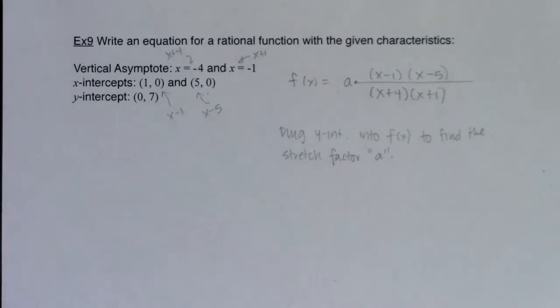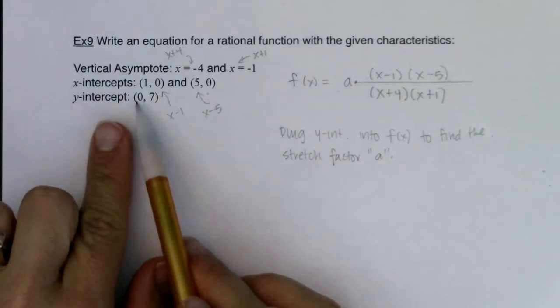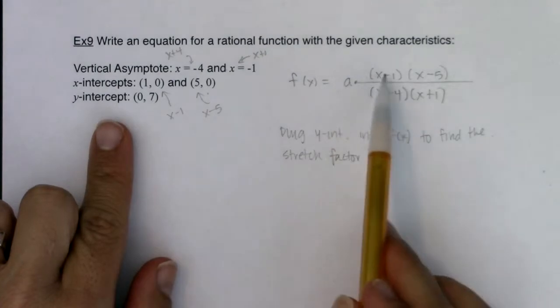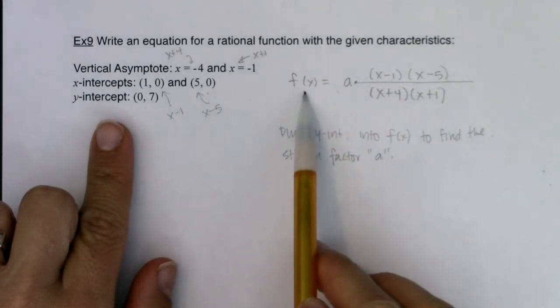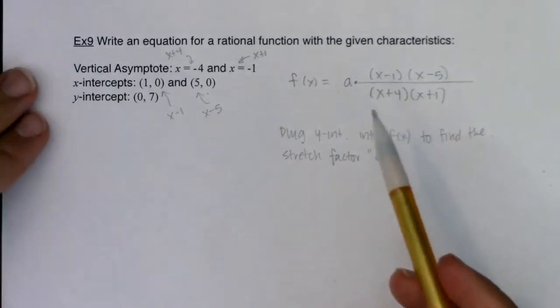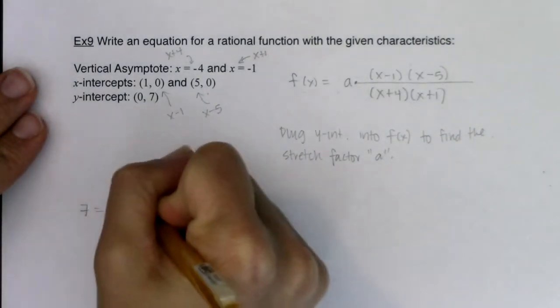Are we stretching or shrinking our y-values? All right, so if I'm going to plug my y-intercept in, it's saying when x is 0, y is 7. So I'm going to plug 0 in for x in these four spots, and I'm going to plug 7 in for y in the function. All right, so let's see what we have here. So I will have 7 is equal to a times, what do we got?